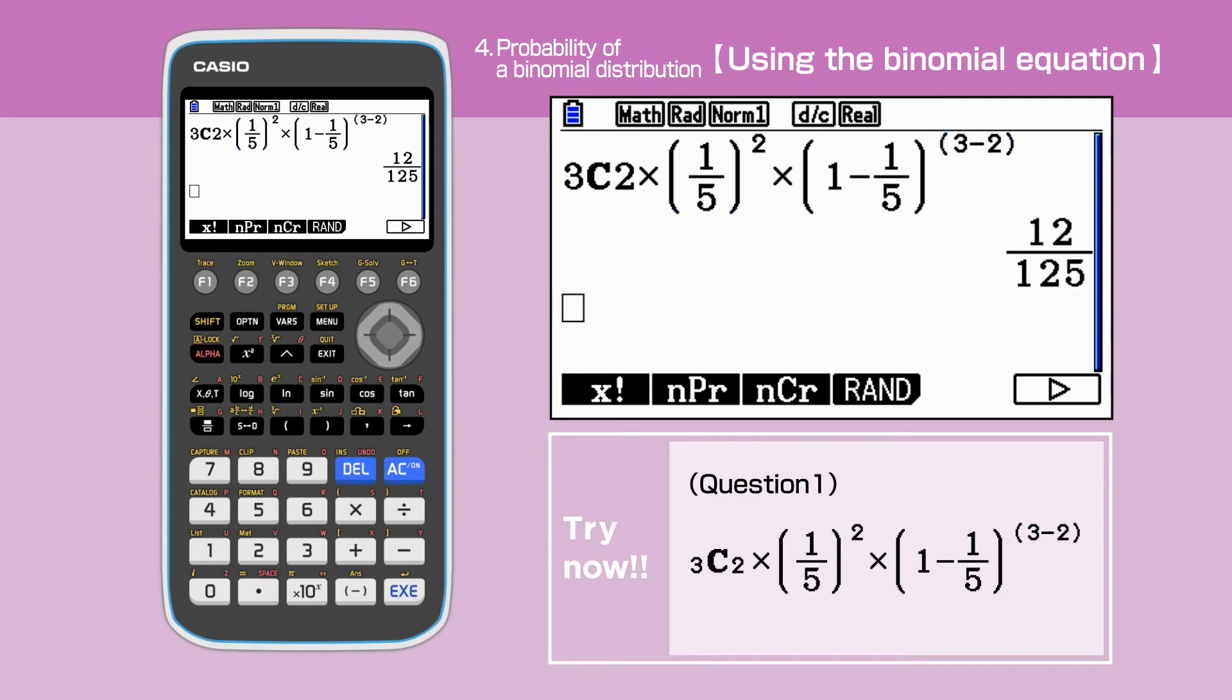The answer for the first question is 12 over 125, and you are able to convert the answer into the decimal by pressing the SD button. And you will have 0.096.